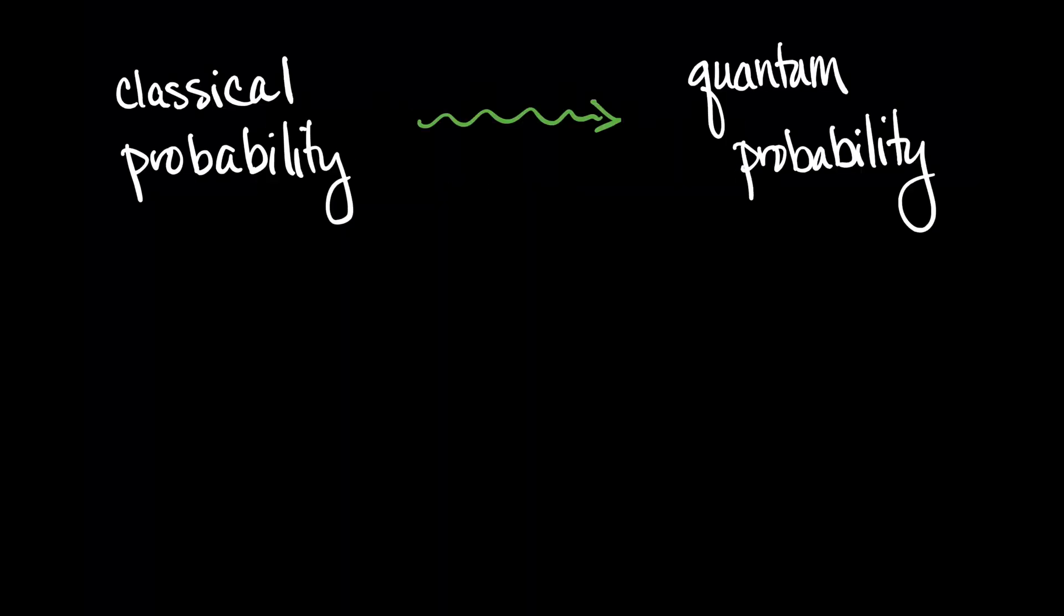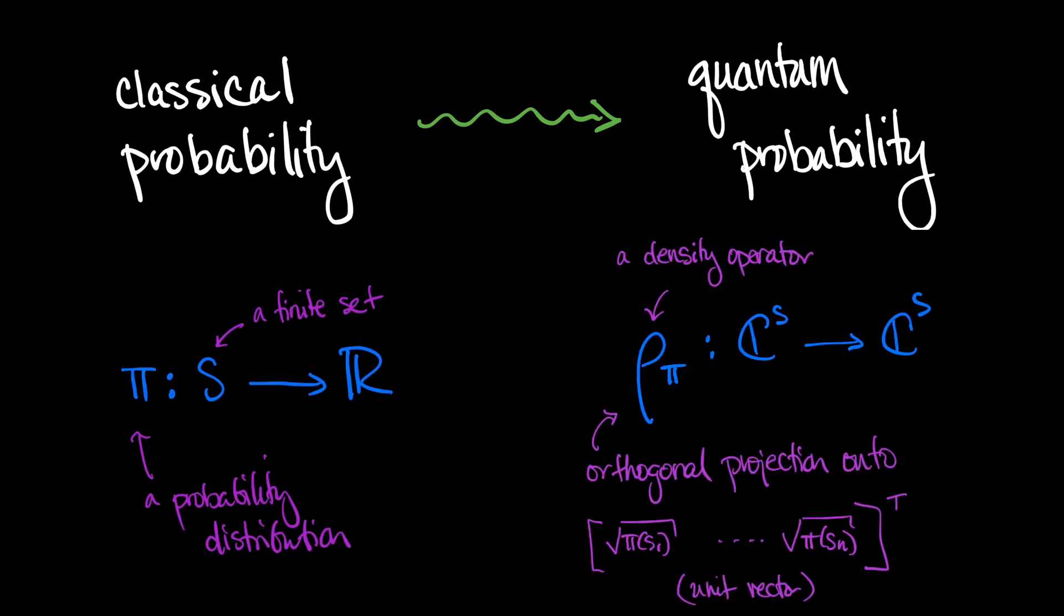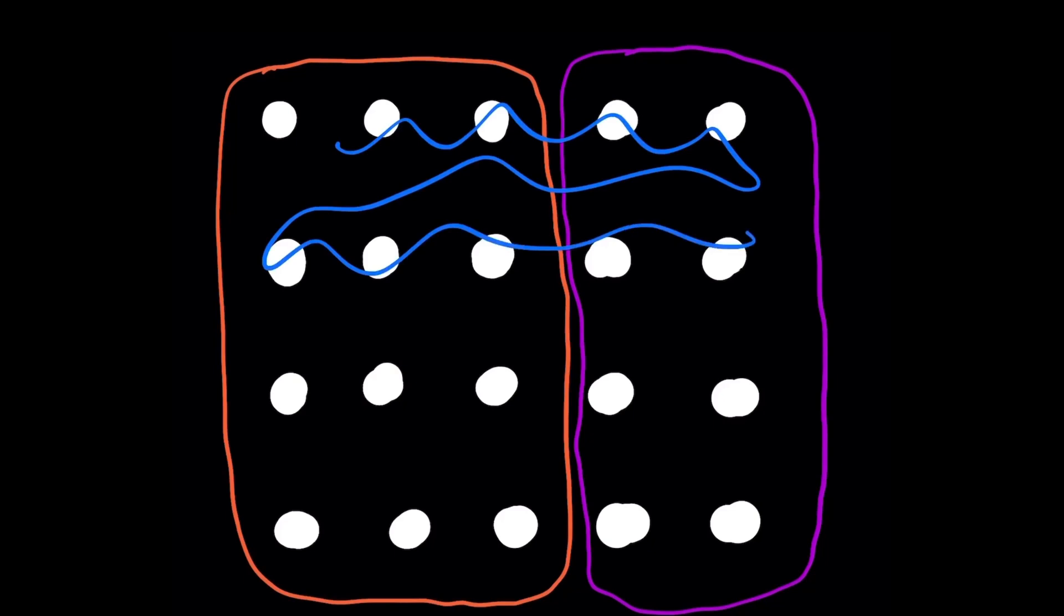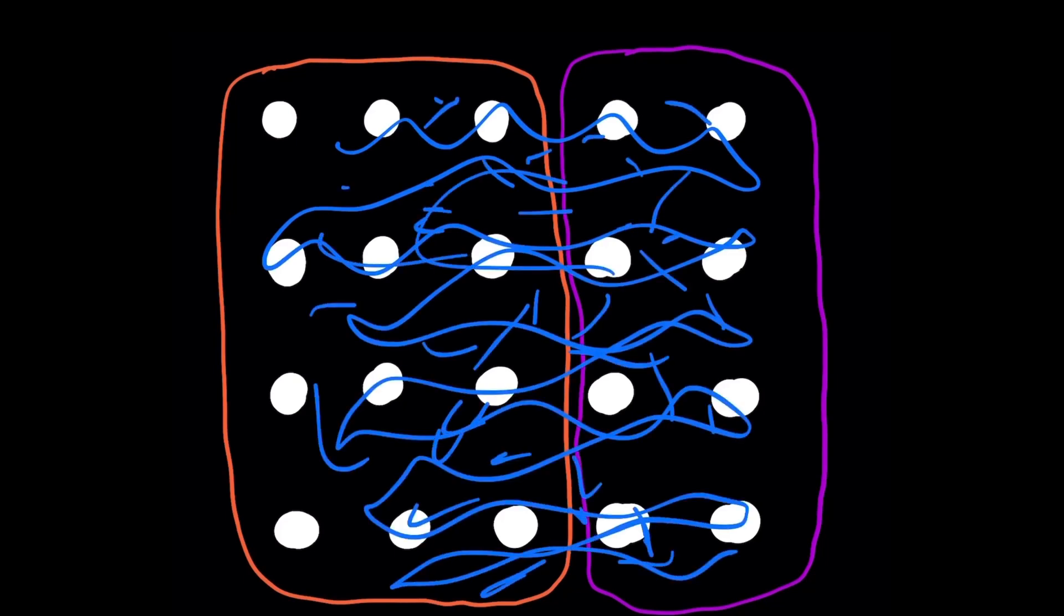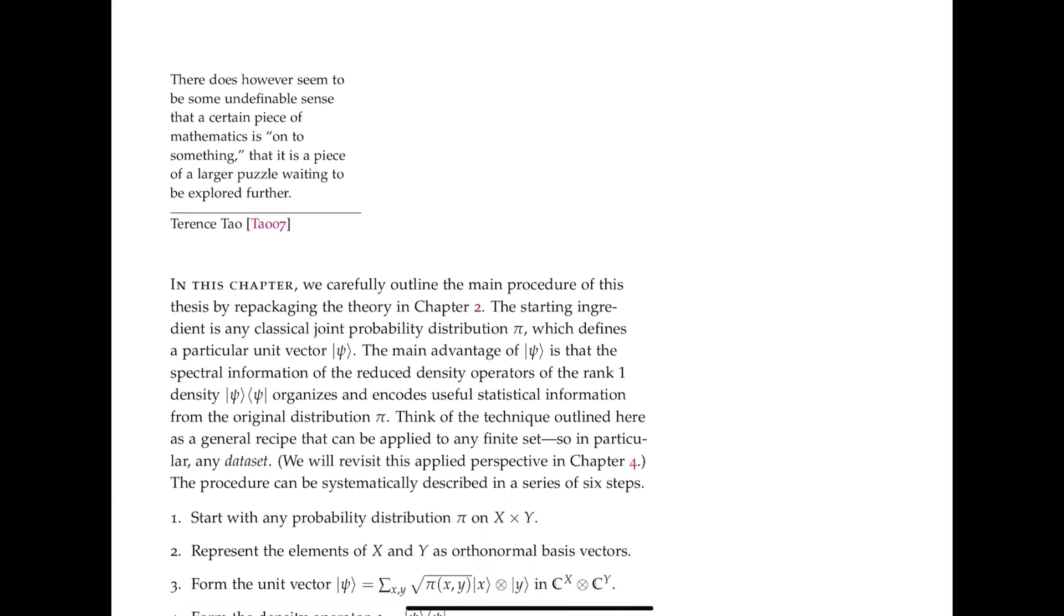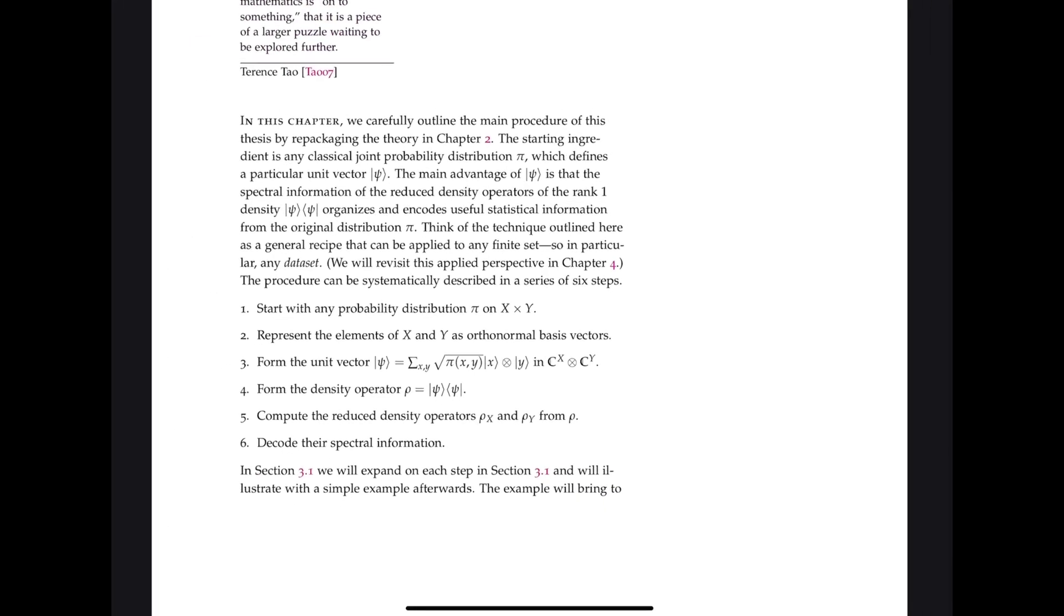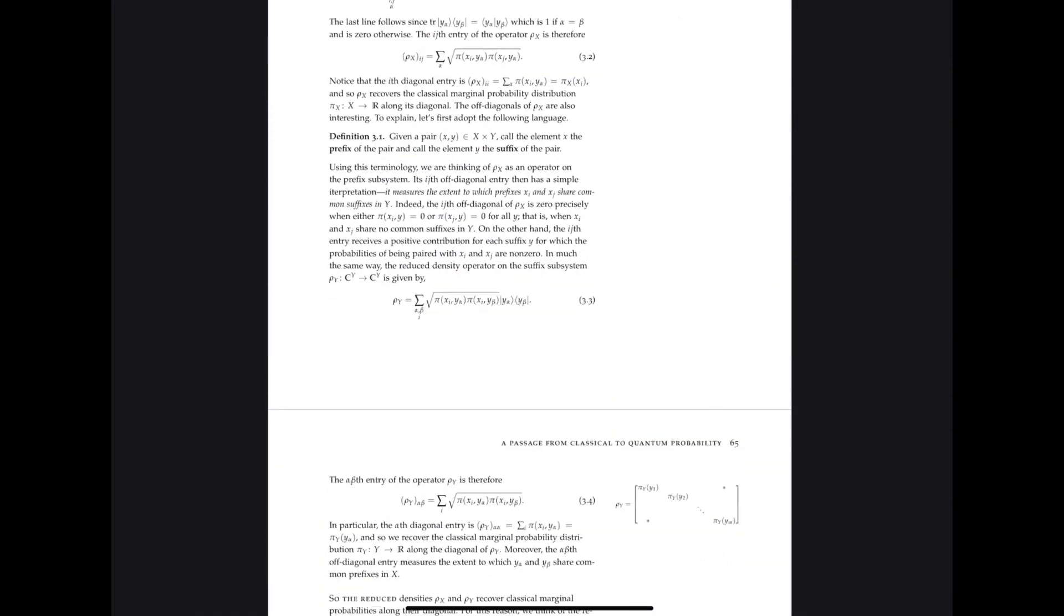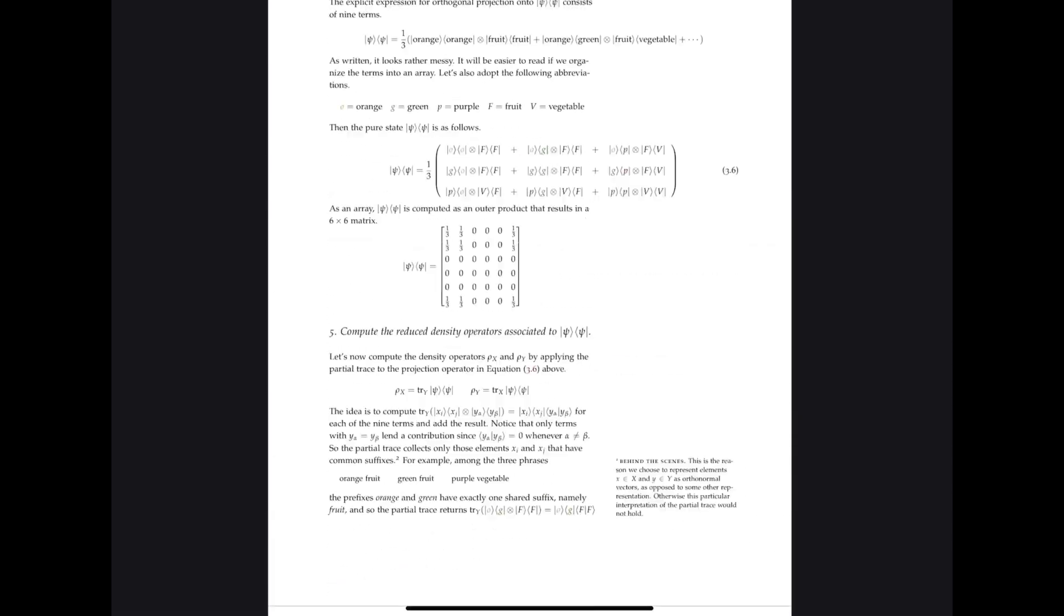It turns out that when you make this passage from classical to quantum probability in a particular way, then you discover a certain paradigm which plays a key role in the thesis. Here's the paradigm. Suppose you have some large composite system. Then you can reconstruct the state of that large system if you know the states of smaller systems that comprise it together with knowledge about how those subsystems interact. So that's the content of chapter 3. I describe this very special passage from classical to quantum probability. I give a description of some of the mathematics you find there and then discuss this reconstruction idea. Now, here's a part I really like.